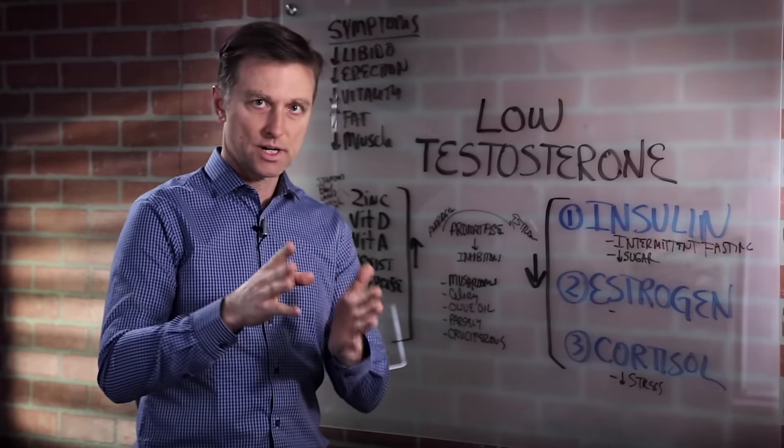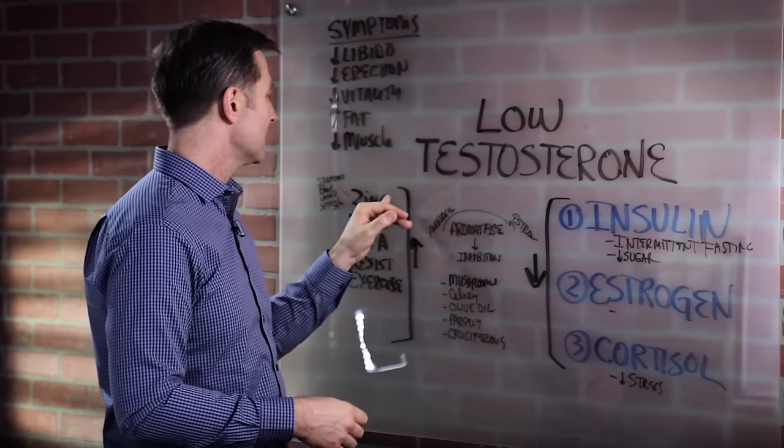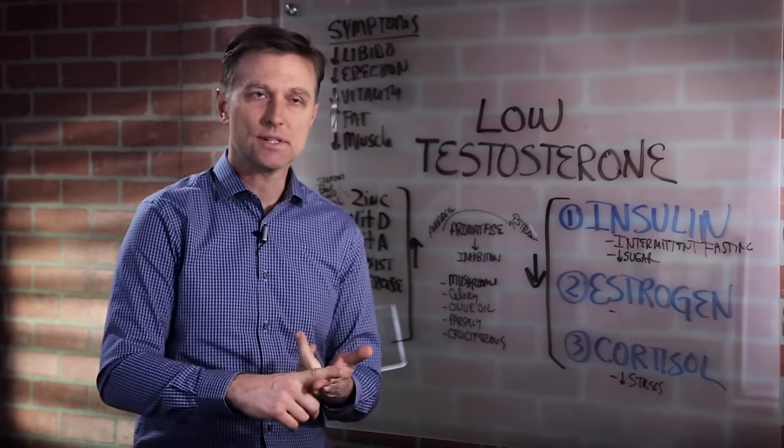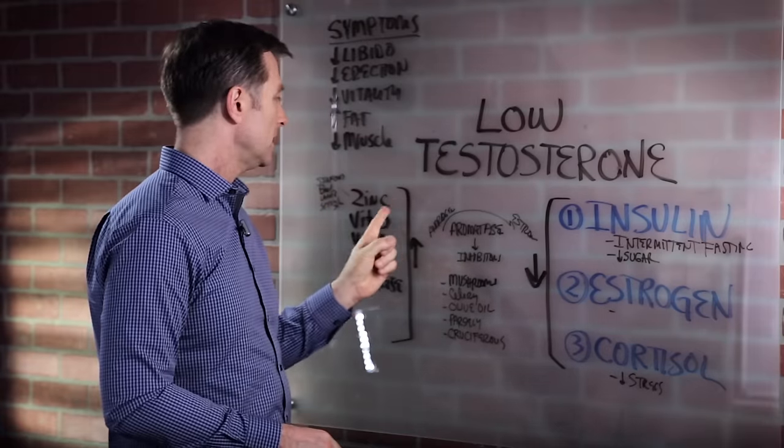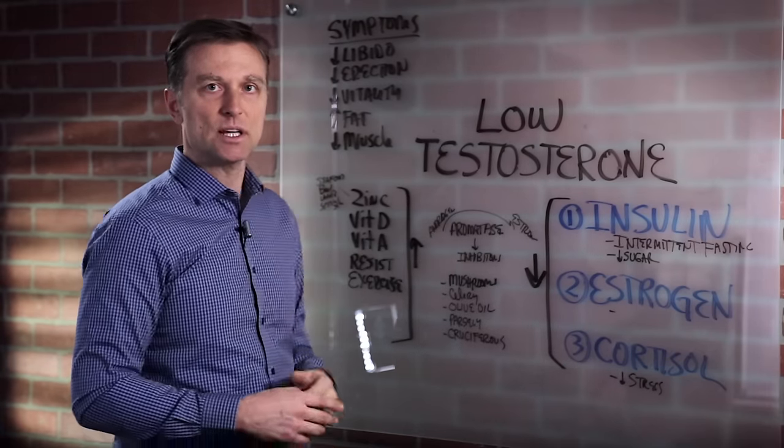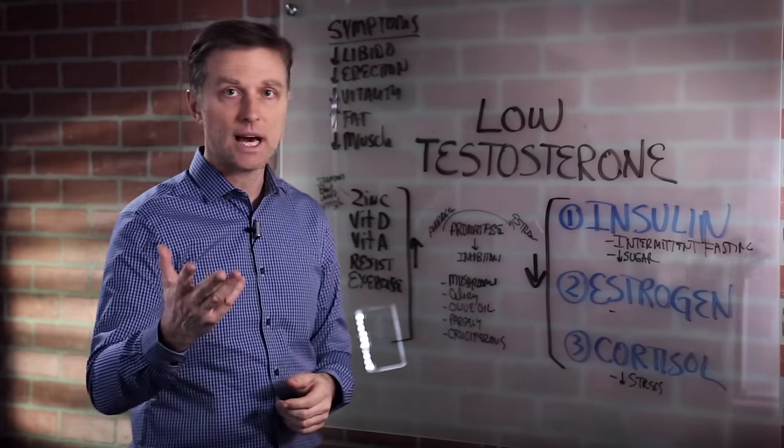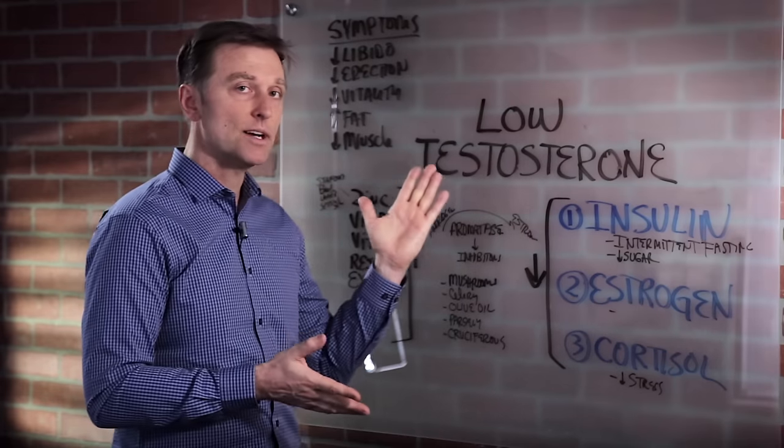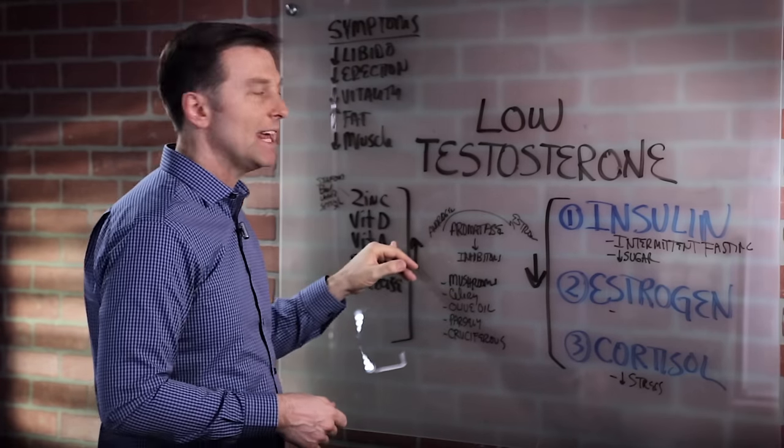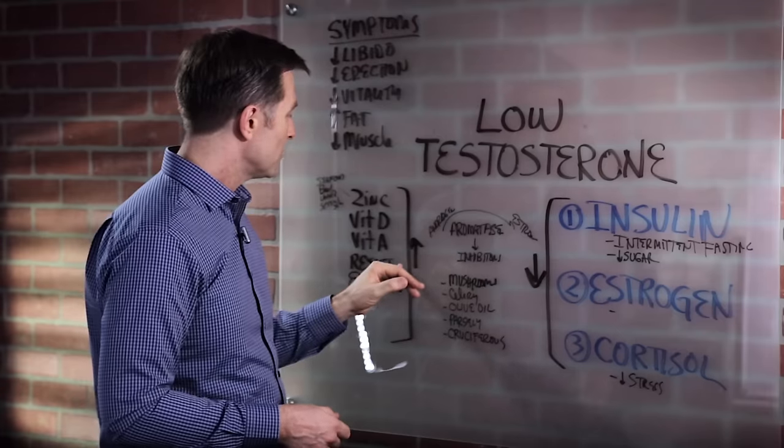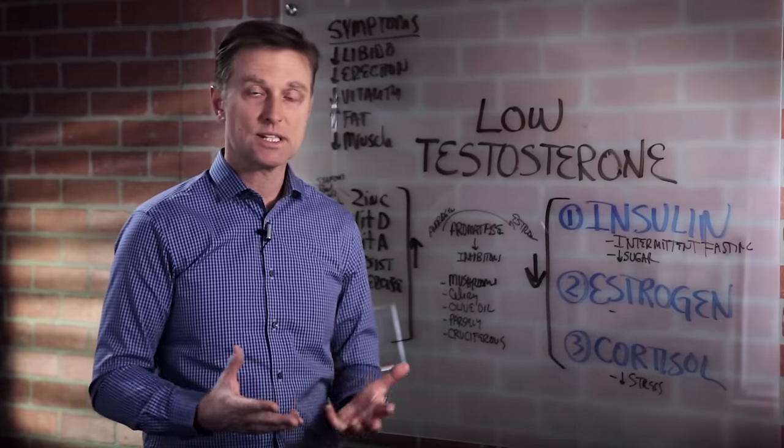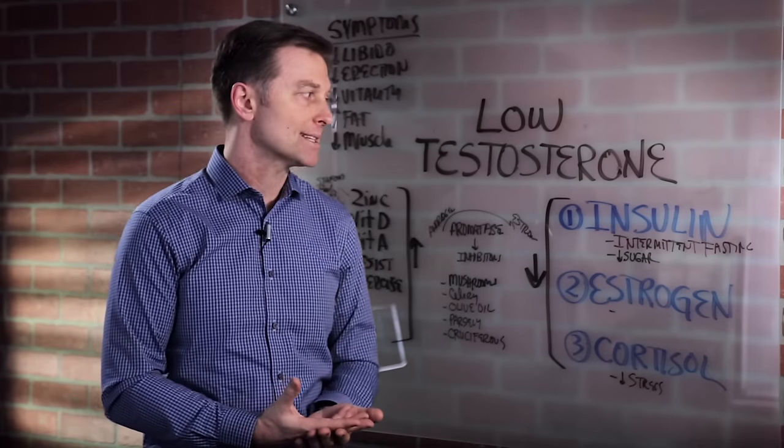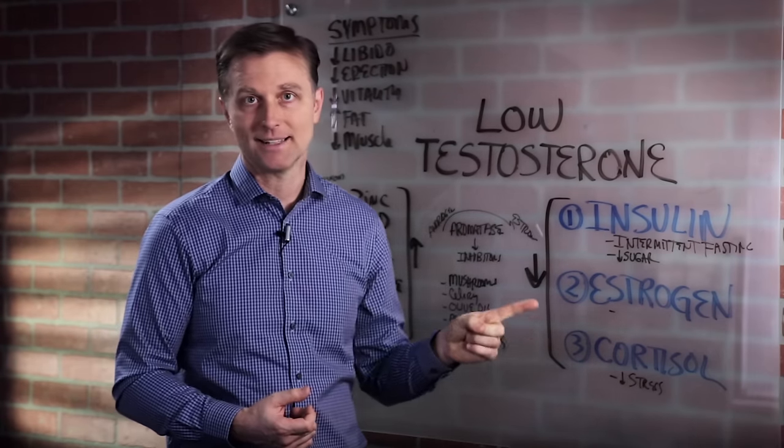Now let's talk about the triggers. You can take zinc from seafood, beef, lamb, sesame seeds, and pumpkin seeds. You can take vitamin D from the sun or cod liver oil. The only vegetarian source would be mushrooms. Vitamin A from cod liver oil and resistive exercise. All those are really good to trigger testosterone, but it doesn't make a huge impact compared to avoiding these three things I'm going to talk about next.